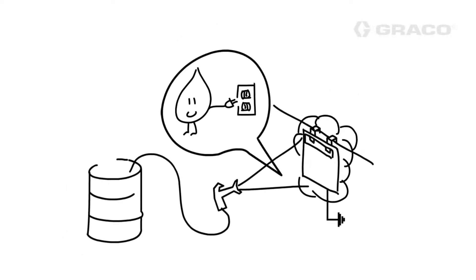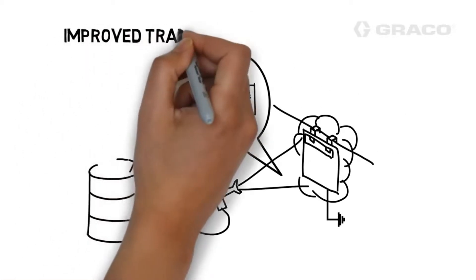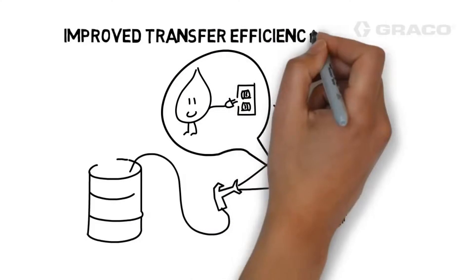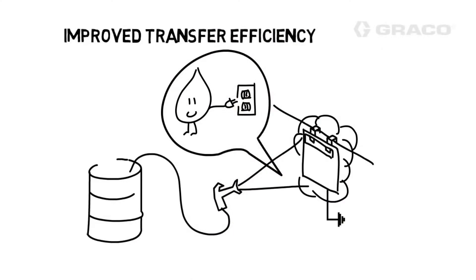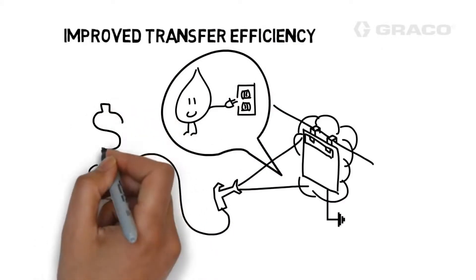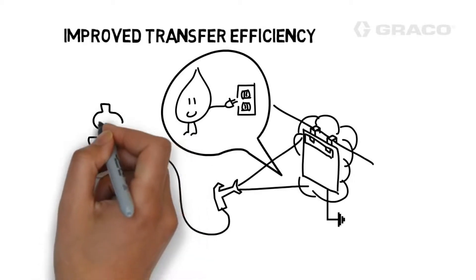Most painting processes refer to this increase as improved transfer efficiency. In more general terms, it means more paint on the part and less paint going to waste.